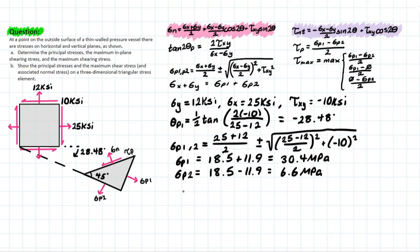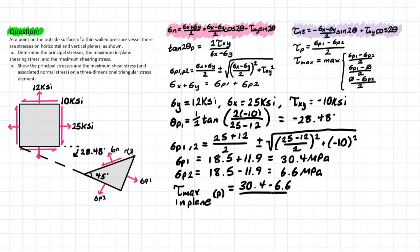Now let's look at the max in-plane shearing stress. The max in-plane shear stress equals (sigma_p1 − sigma_p2) / 2 = (30.4 − 6.6) / 2, which gives us 11.9 MPa.